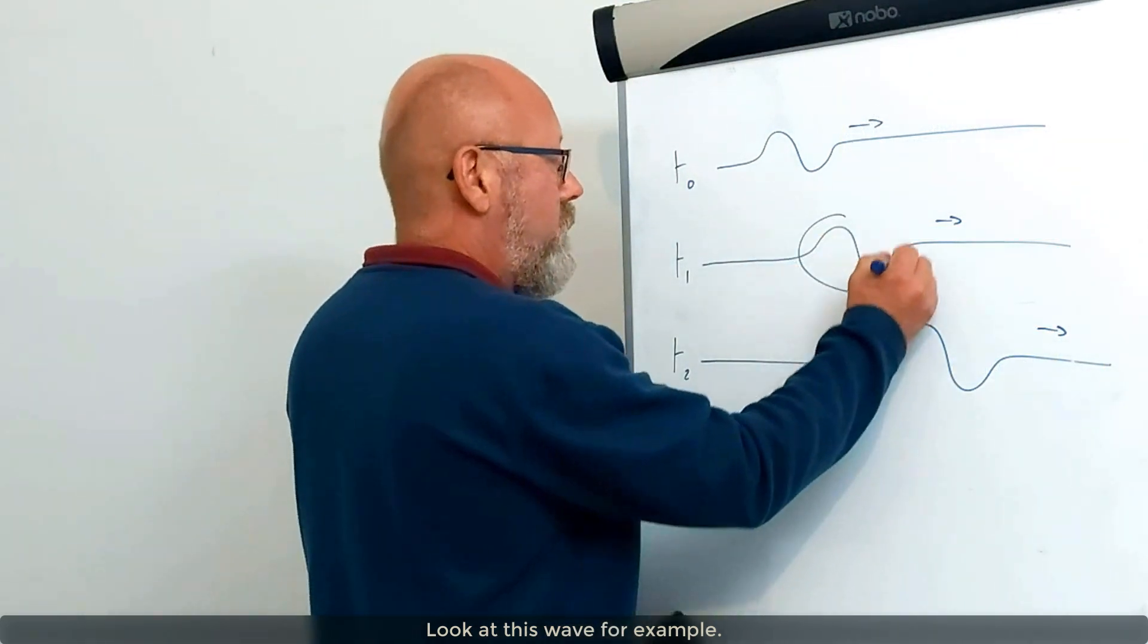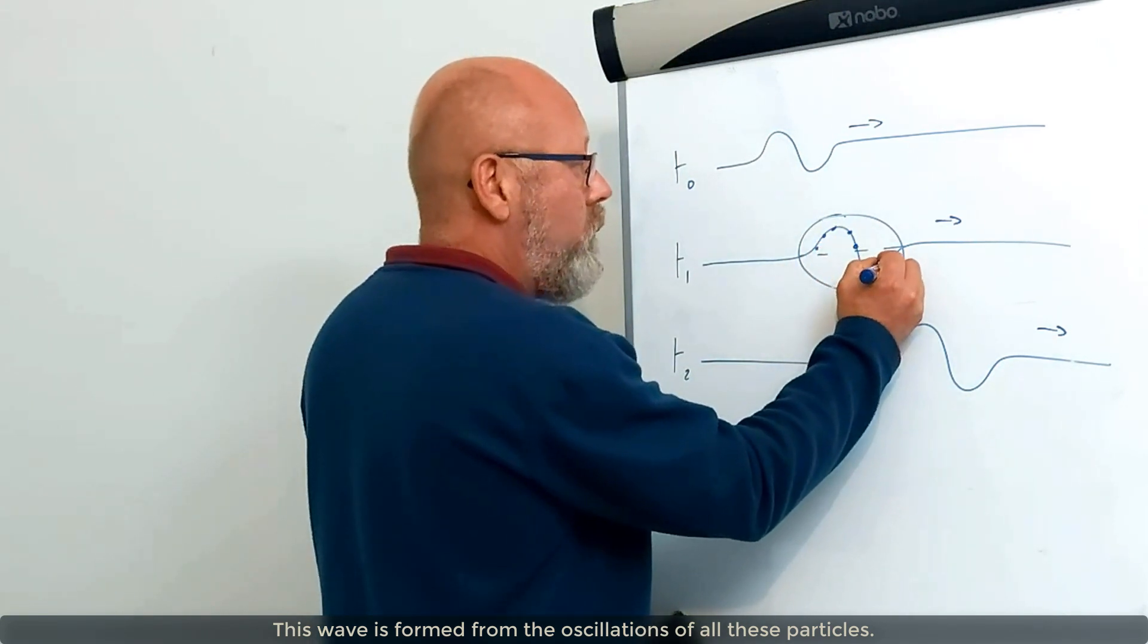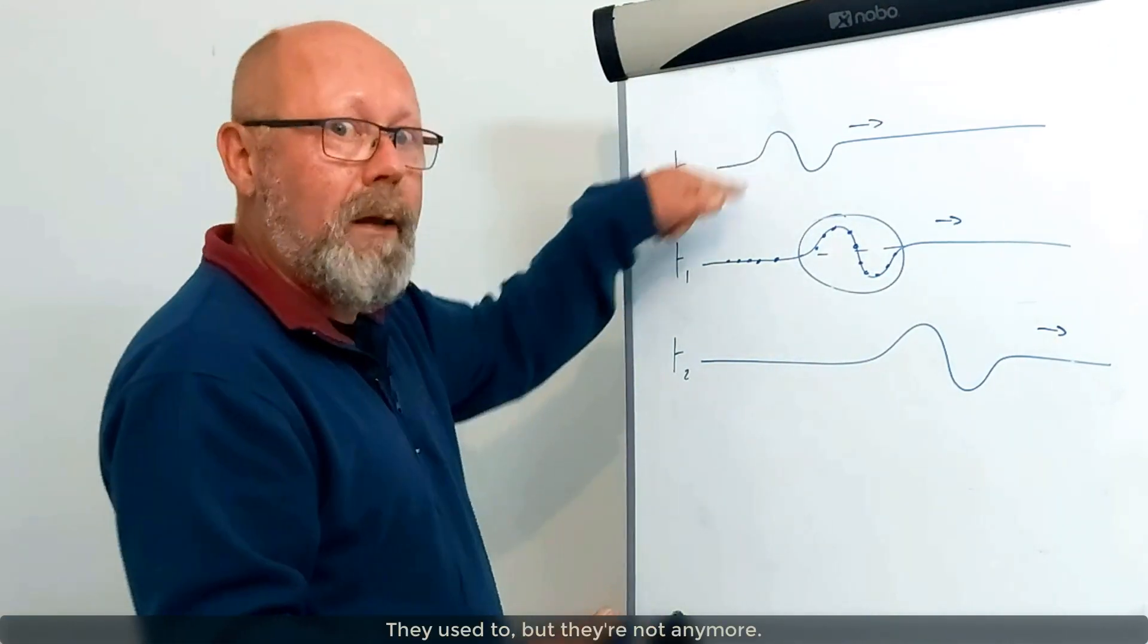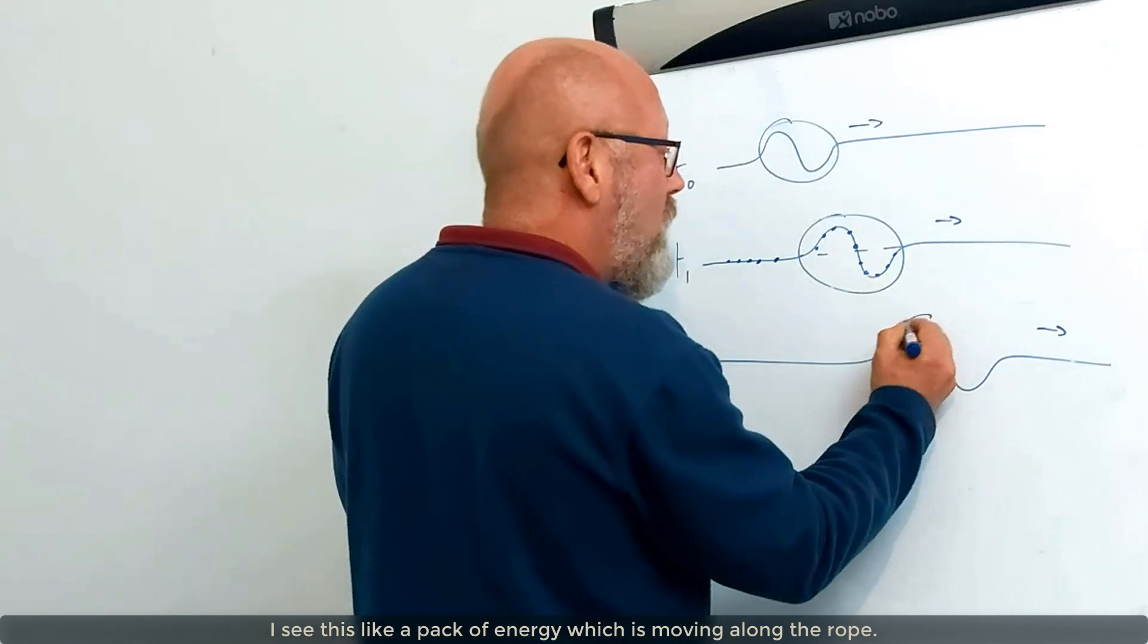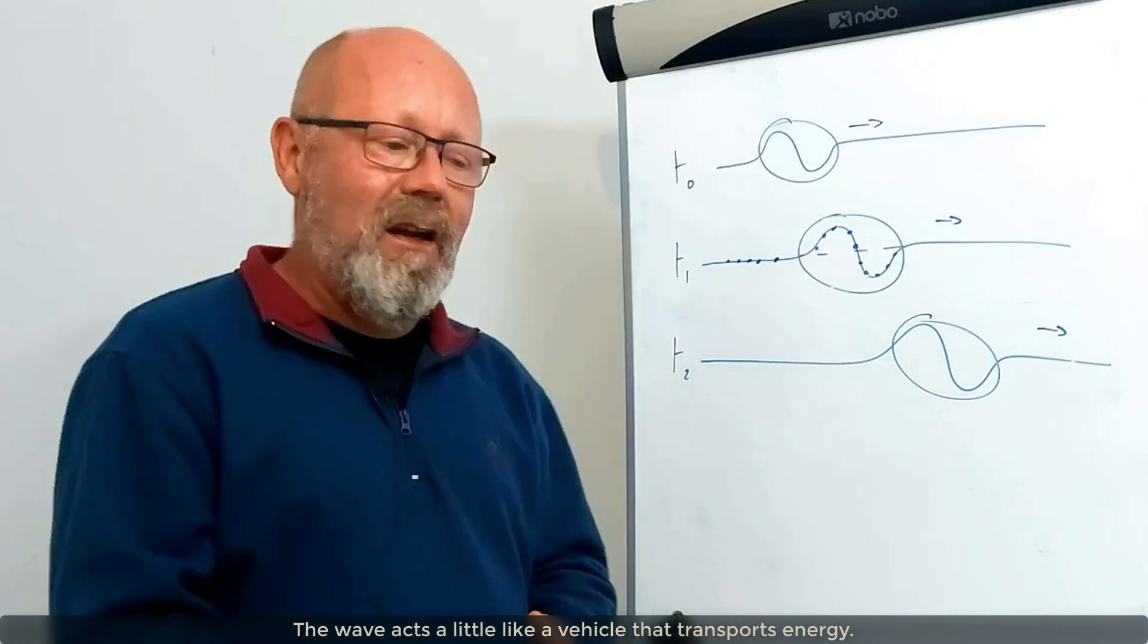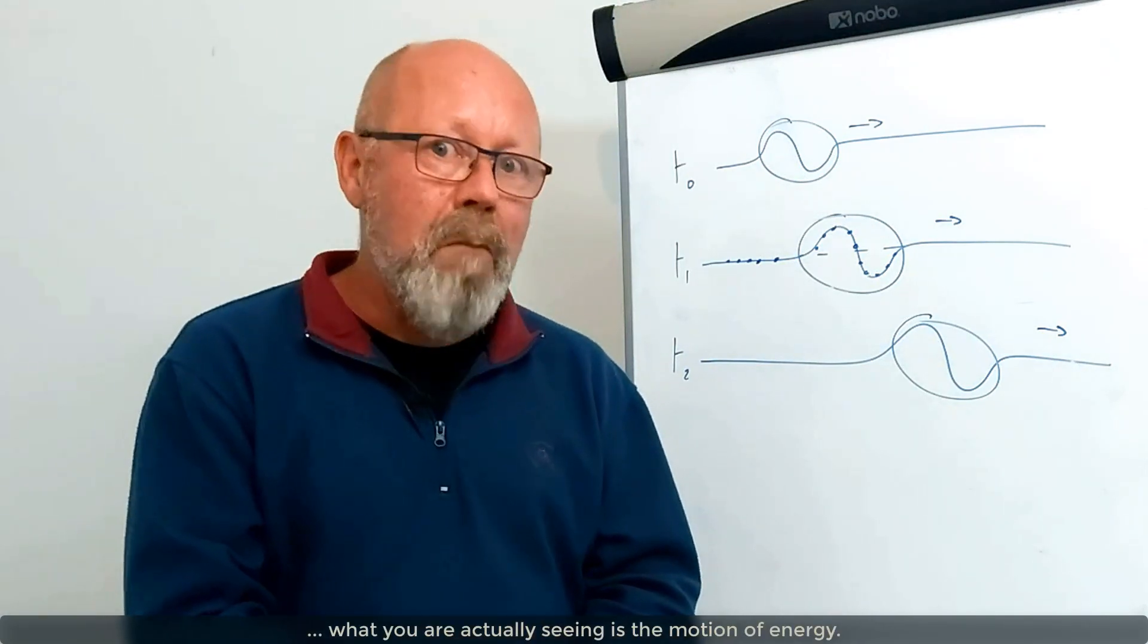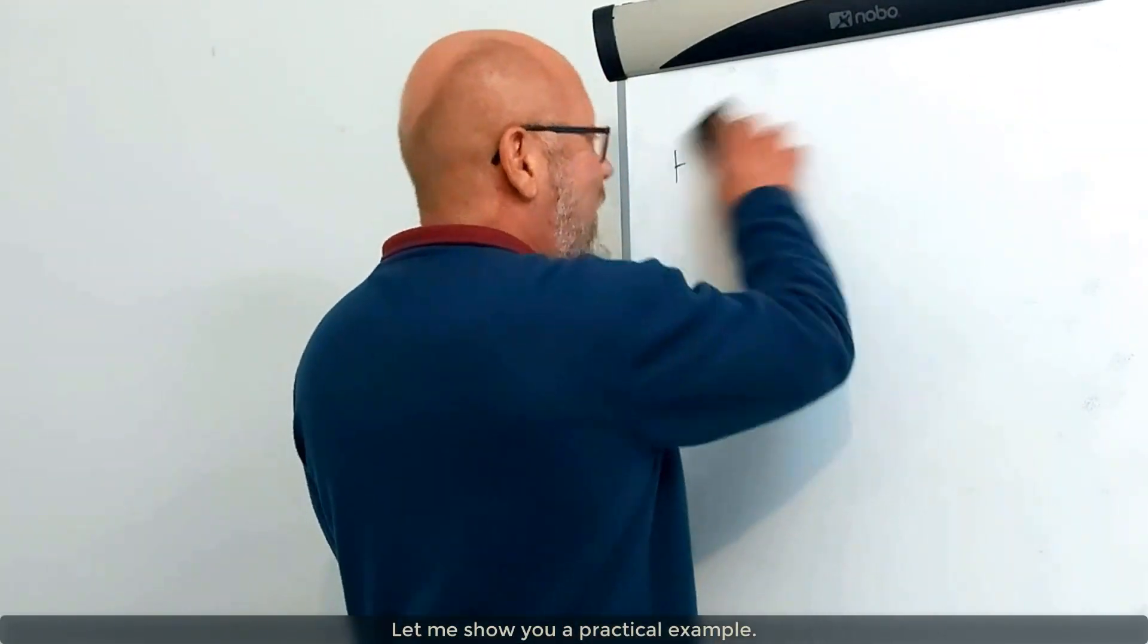Look at this one, for example. Here, this wave is formed from the oscillation of all these particles. These particles are oscillating, therefore they have energy. The particles before are not oscillating. They don't have any energy. They're not moving. They used to, but they're not anymore. So when I see this, I see this like a pack of energy which is moving along the rope. The wave here acts a little bit like a vehicle that transports energy. I kind of like this idea because when you're seeing a wave moving, say on a lake for example, what you're actually seeing is the motion of energy.